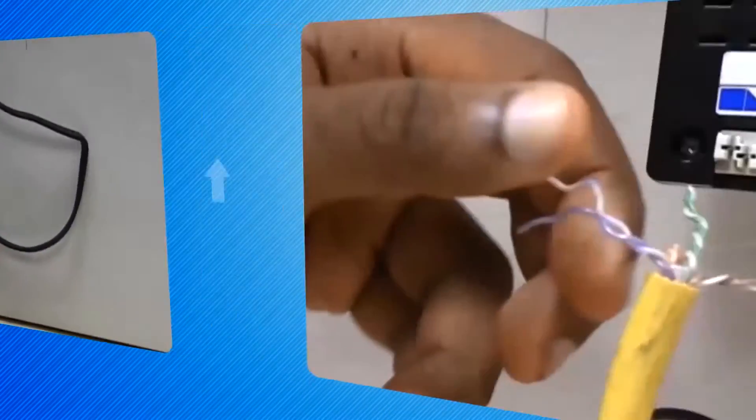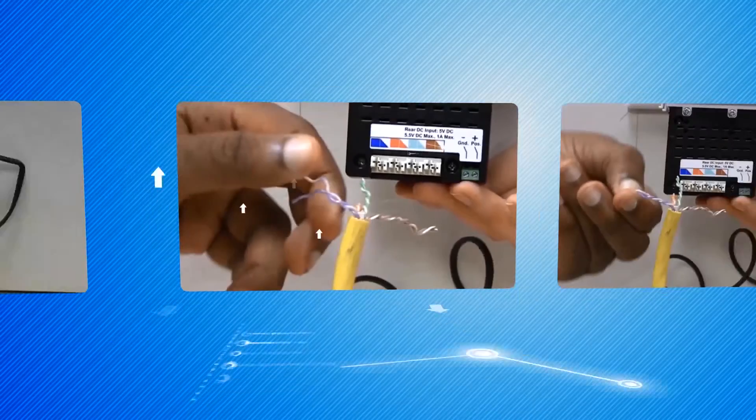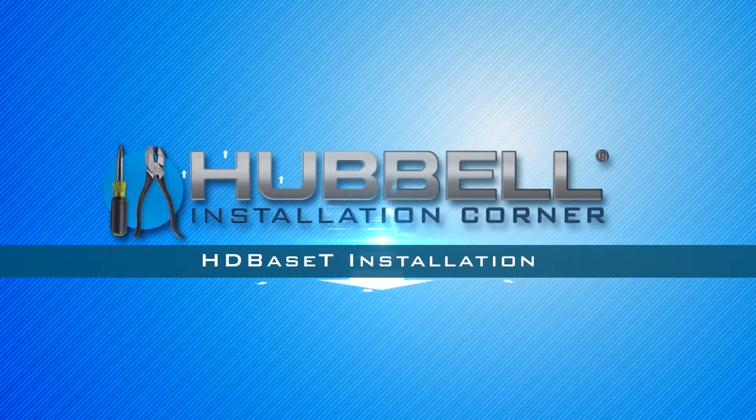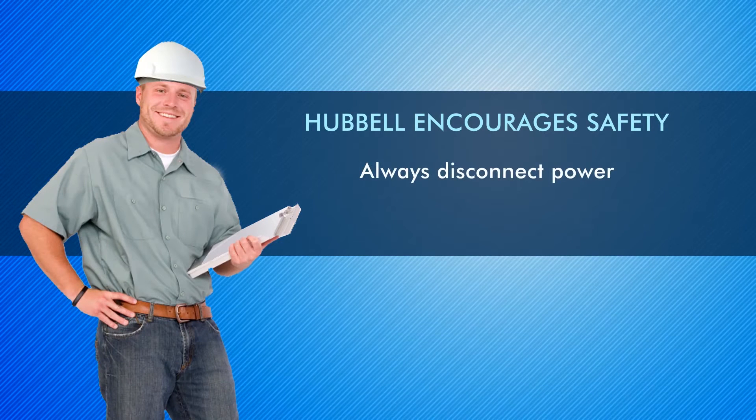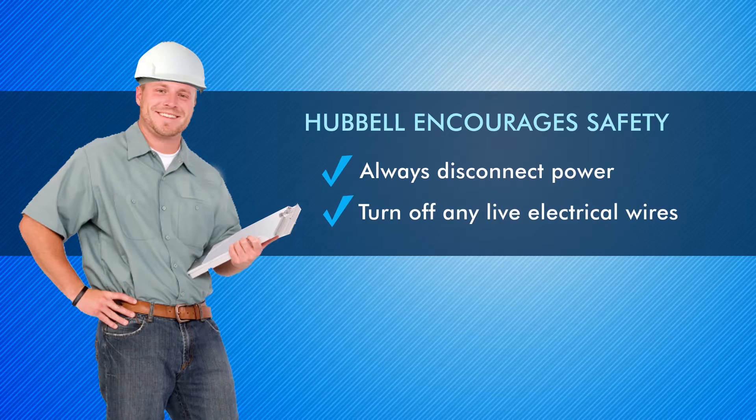Hubble HDBase-T HDMI extenders allow you to send 4K UHD video with audio and control up to 100 meters or 328 feet. This video will show you how to install and start using these extenders.